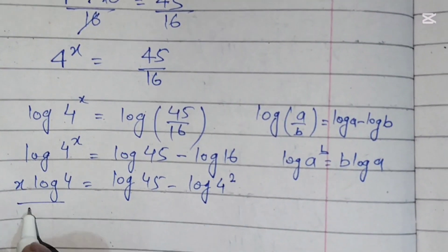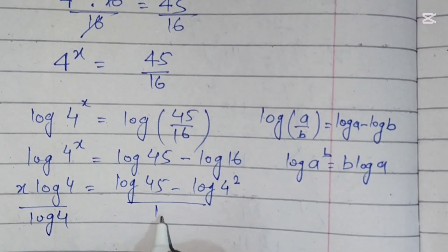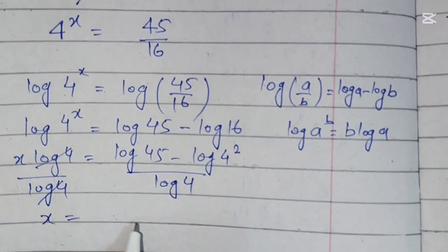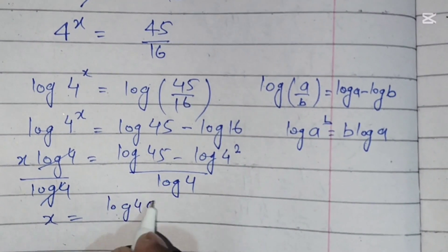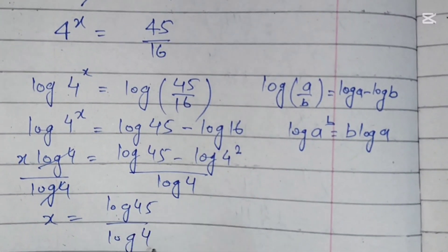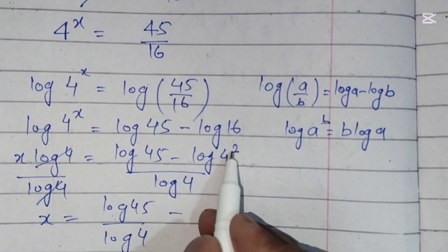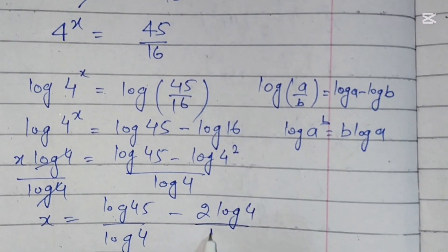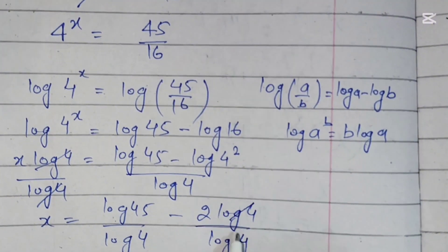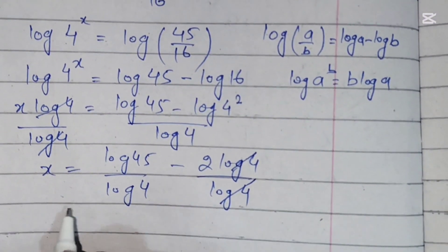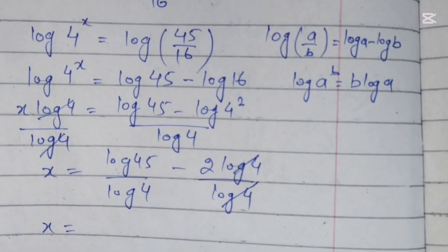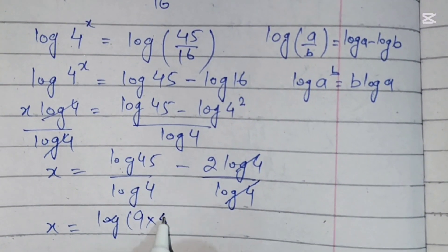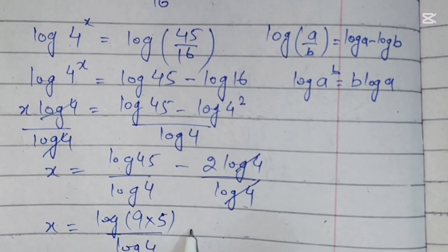Now we will divide both sides by log of 4. Log of 4 cancels with log of 4 on the left side, giving x equals log of 45 over log of 4 minus 2 times log of 4 over log of 4. Applying the power rule, log of 4 squared becomes 2 times log of 4, and log of 4 cancels, so x equals log of 45 over log of 4 minus 2.